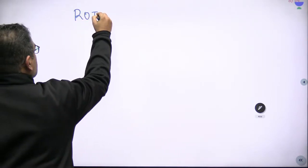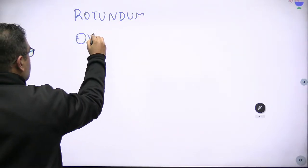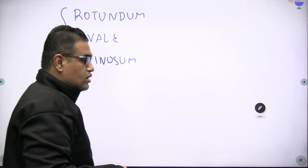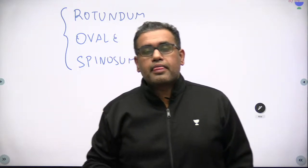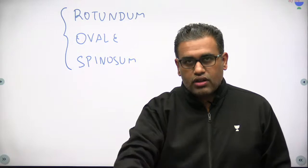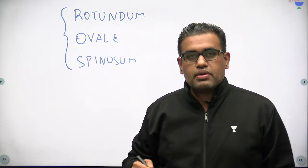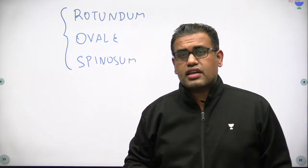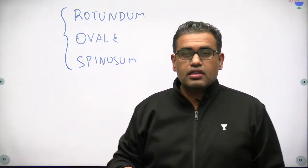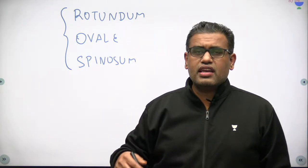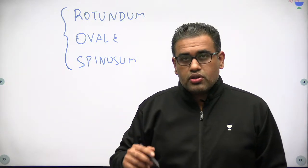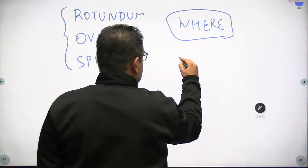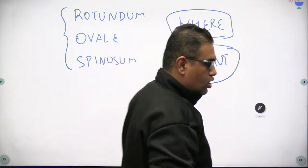There is an important foramen known as foramen rotundum, then foramen ovale and foramen spinosum. These are three important foraminas found in the sphenoid bone. The reason we keep asking about foraminas is that in the skull we have a brain, and the various nerves and vessels going in and out of the brain can only pass through the foraminas of the skull. In any skull fracture, these foraminas may be broken or compressed by a tumour or pathology. So we need to know two things: where each foramen lies, and what its contents are.